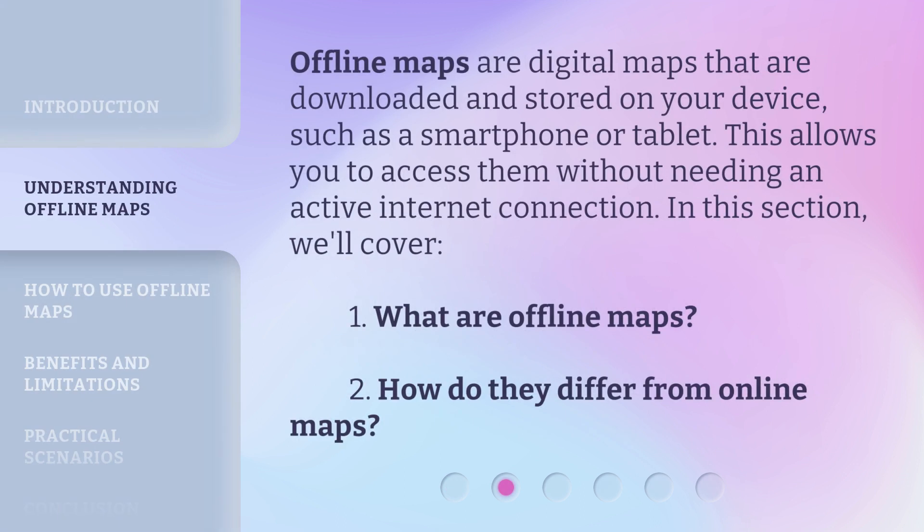Offline maps are digital maps that are downloaded and stored on your device, such as a smartphone or tablet. This allows you to access them without needing an active internet connection. In this section, we'll cover: what are offline maps, and how do they differ from online maps?